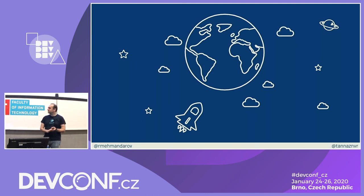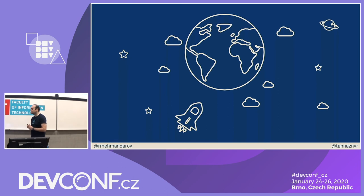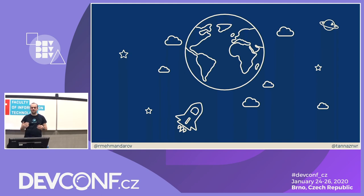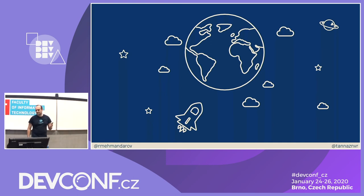We think we can solve that problem with IoT devices. IoT devices are cool, easy to set up, accessible, and the number of these devices is growing so fast. Maybe one of those devices can solve our problem — and that was exactly our thought. We thought about it and said, that's probably a good start. Let's see where it got us.